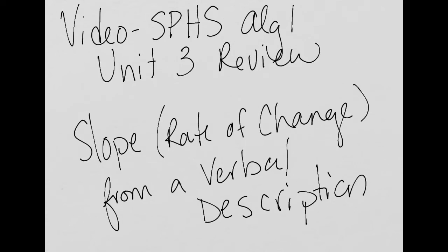This video is for the Studying Point High School Algebra 1 Unit 3 Review. We're going to be looking at finding slope or rate of change from a verbal description or from a word problem.